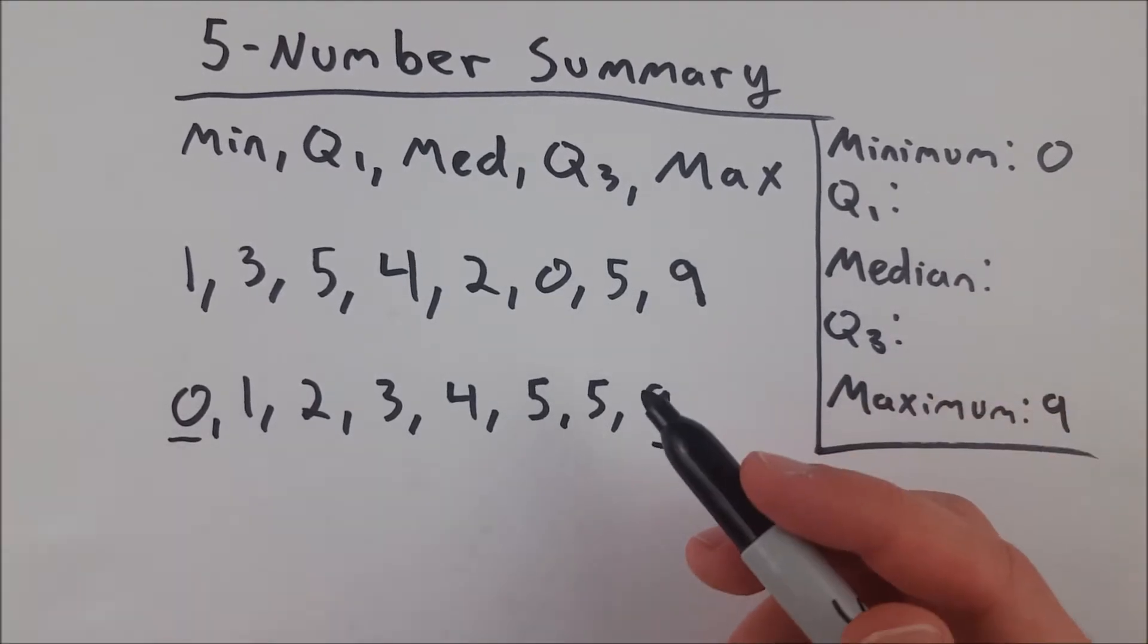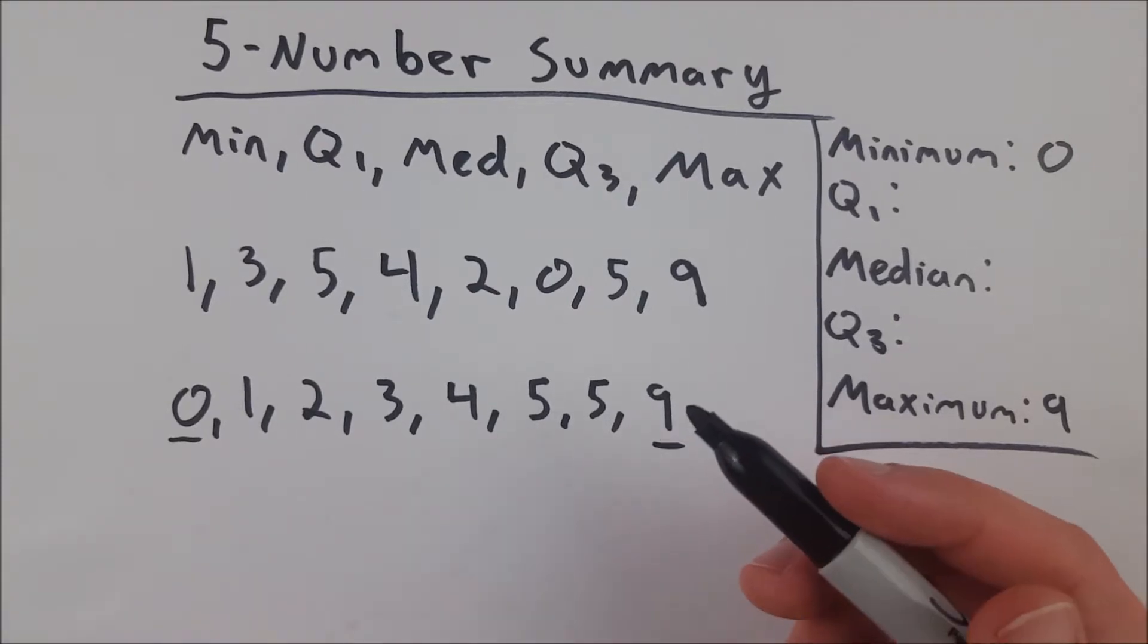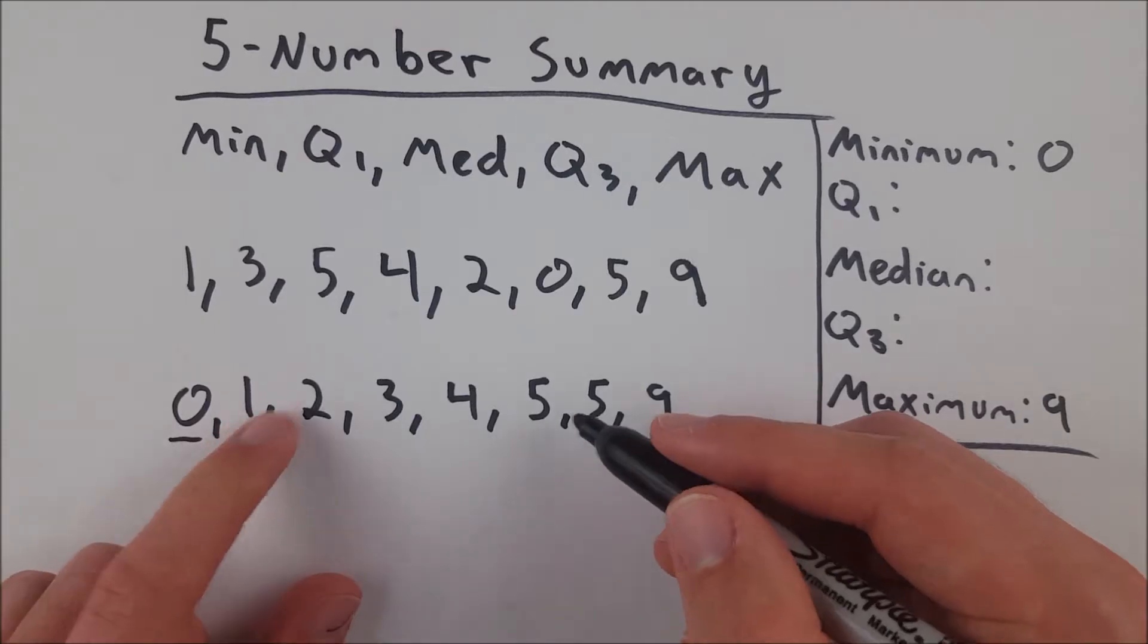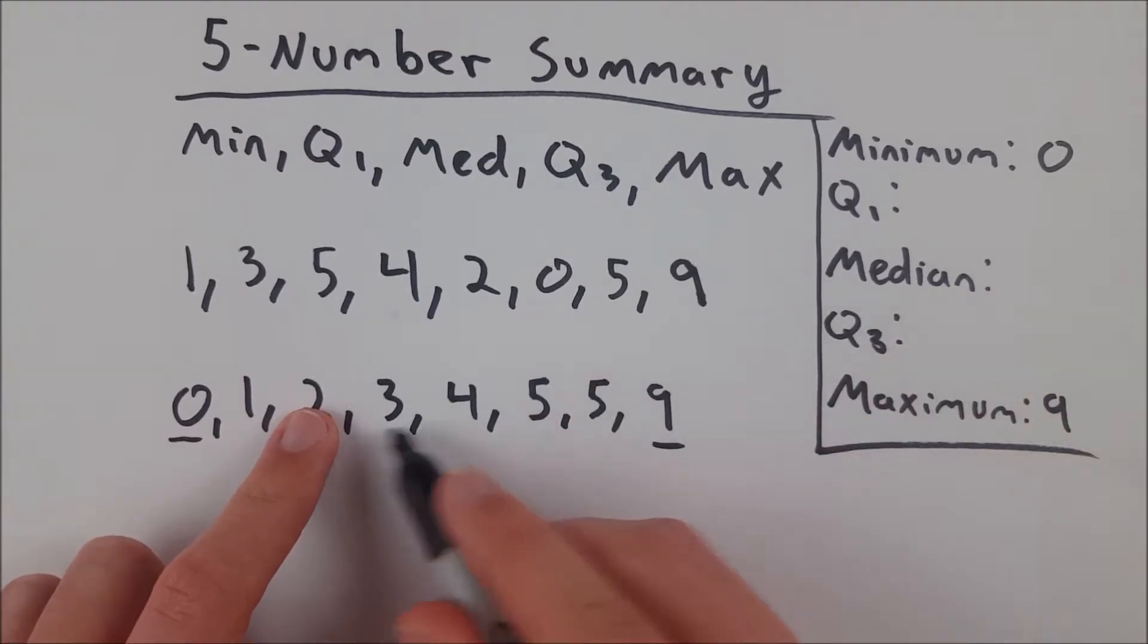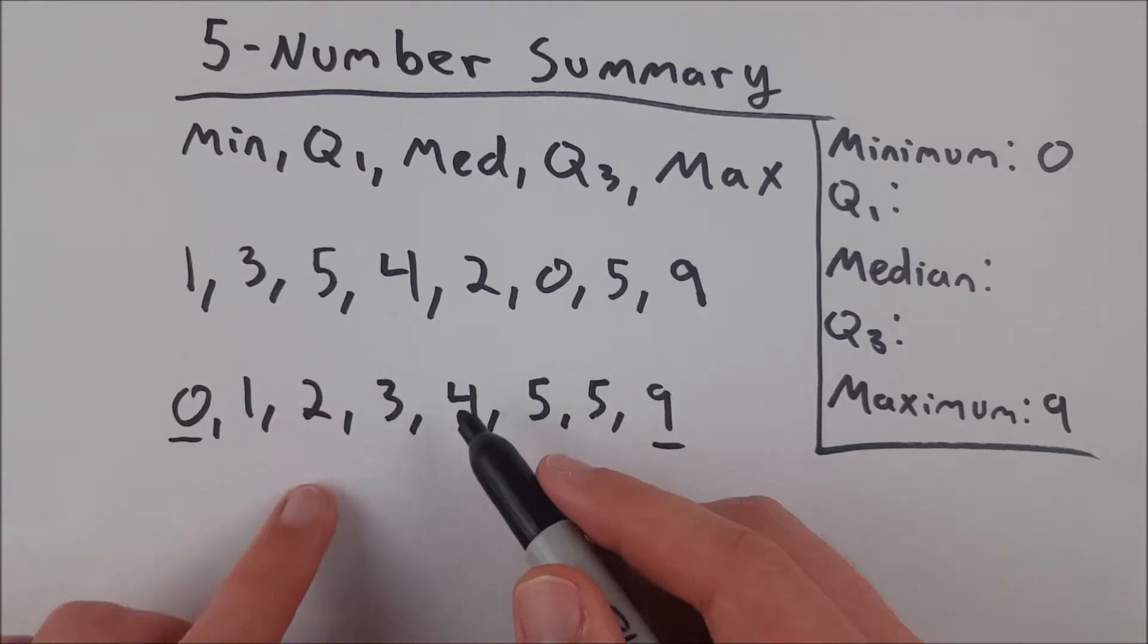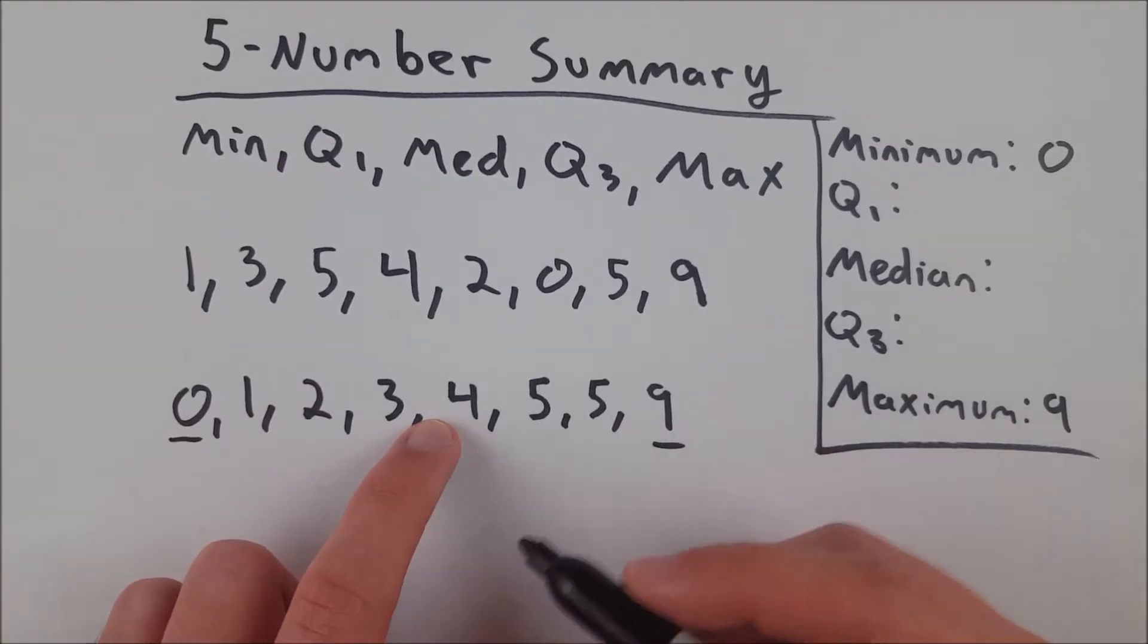So to find the median, of course, it's just the middle piece of data. So let's go in 1, go in 2, go in 3. We see our middle two pieces of data are 3 and 4. So we just go halfway between them, which is 3.5.